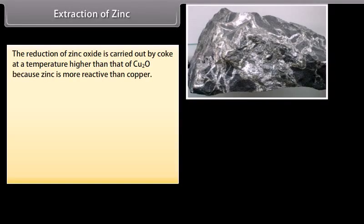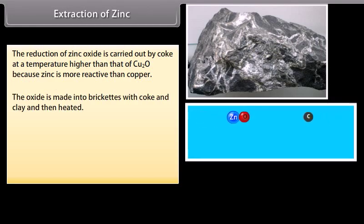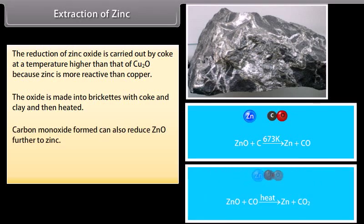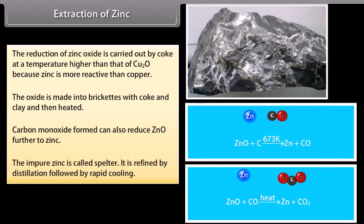Extraction of zinc. The reduction of zinc oxide is carried out by coke at a temperature higher than that of Cu2O because zinc is more reactive than copper. The oxide is made into briquettes with coke and clay and then heated. Carbon monoxide formed can also reduce ZnO further to zinc. The impure zinc is called spelter. It is refined by distillation followed by rapid cooling.